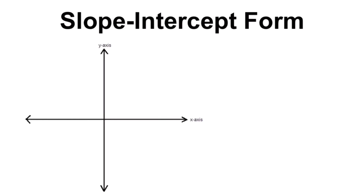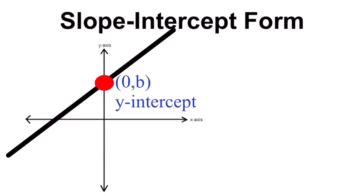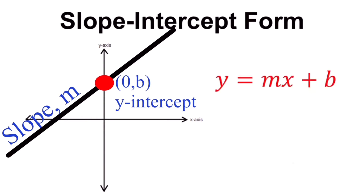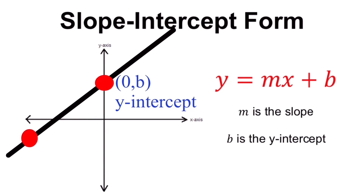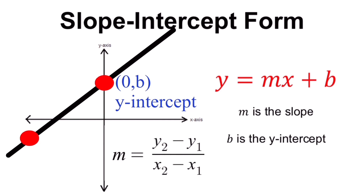If we are given a point that touches the y-axis at (0, b), this is our y-intercept. And if we are given the slope of this line, then we can use the formula y equals mx plus b, where m is the slope and b is the y-intercept. Sometimes the slope is not given but another point is given, so we can solve for the slope using those two points and still use the equation y equals mx plus b.